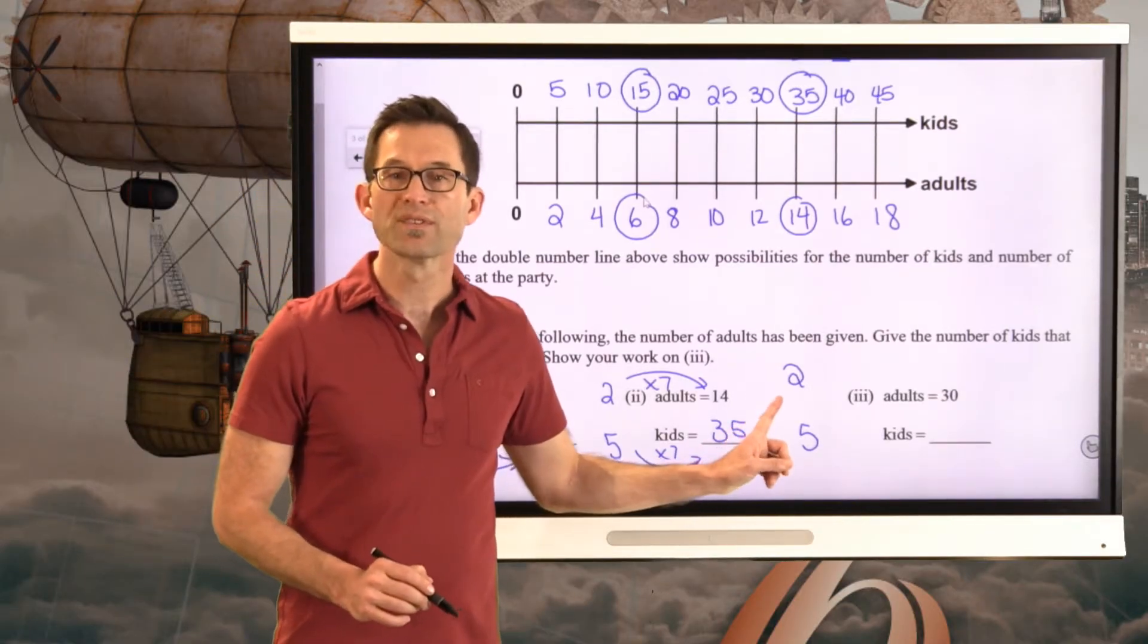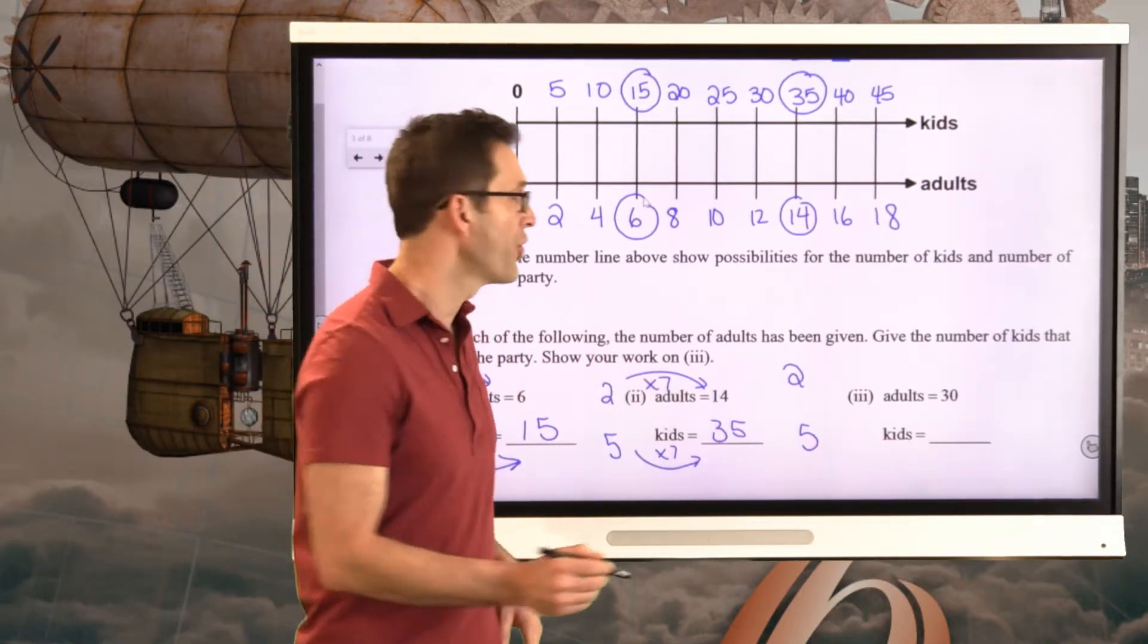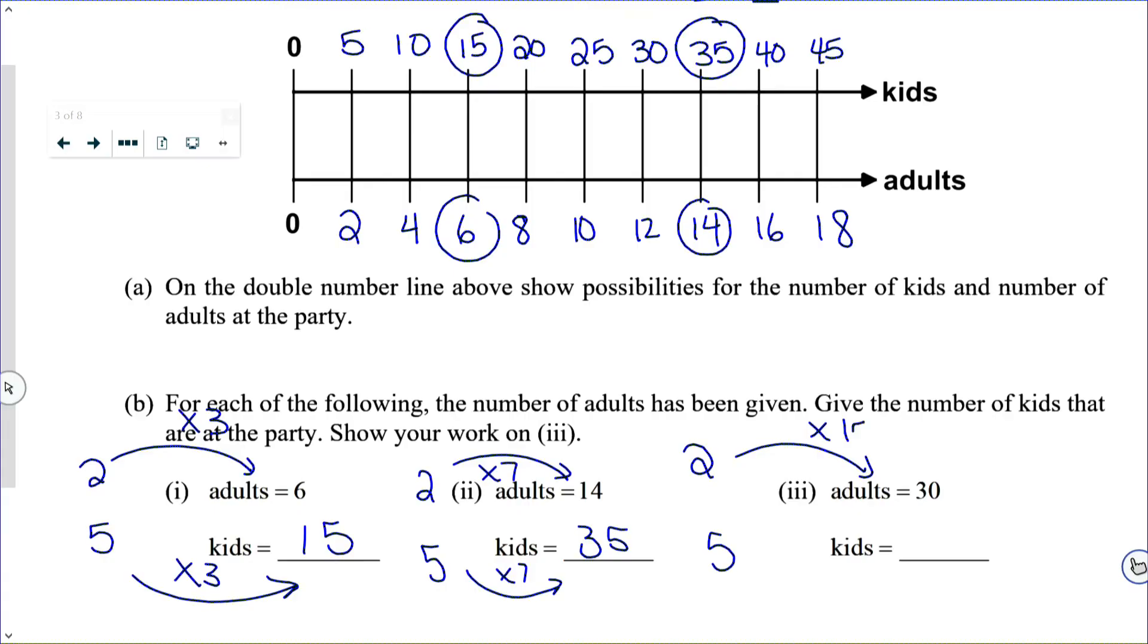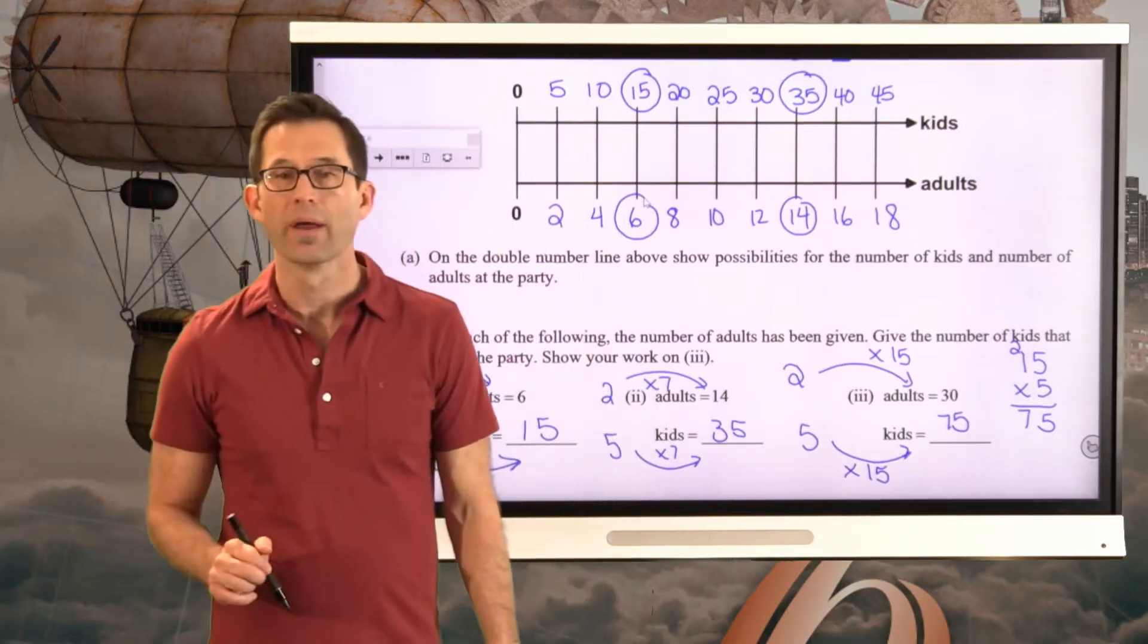Well, to get 30 adults, we would have to multiply the 2 by 15. So to get the number of kids, we'd have to multiply the 5 by 15. And when we do that, we get 75 kids.